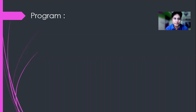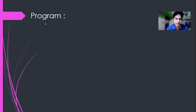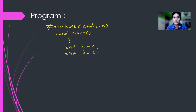So here I'm writing a program: #include stdio.h, void main, opening curly bracket, then int a = 1; int b = 1; next int c = a++ || b--; This is a++ that is post-increment of a, then post-decrement of b, within that the OR operator is used.